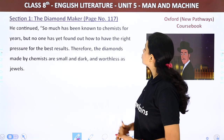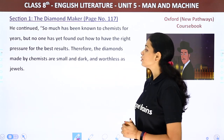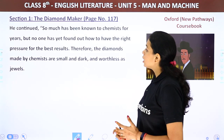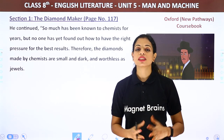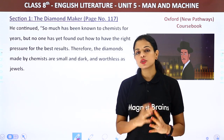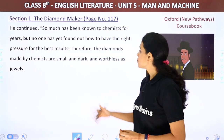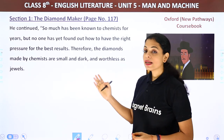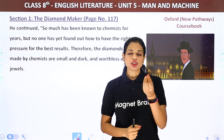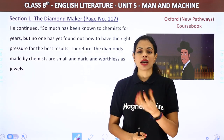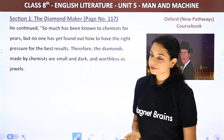'So much has been known to chemists for years, but no one has yet found out how to have the right pressure for the best results. Therefore, the diamonds made by chemists are small and dark and worthless as jewels.' The chemists who make diamonds cannot find the exact pressure needed, so their diamonds come out too small and dark to have any value.